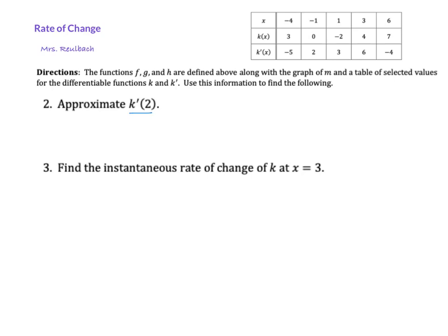So let's look at our function k up here. First of all, we notice that k is differentiable, and so that means if it's differentiable, then it is continuous. So k is continuous, and that means if I look up here, there's not even a two in here. However, since it's continuous, I know that there's a two. It's just not shown in this table.